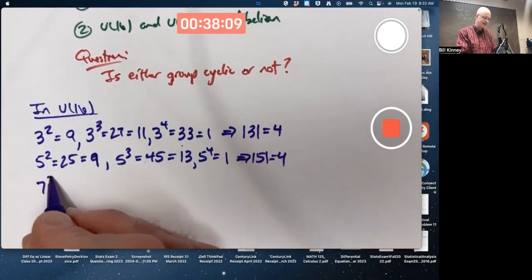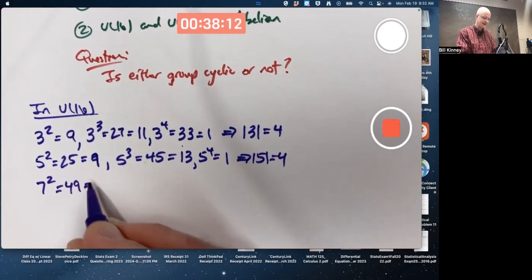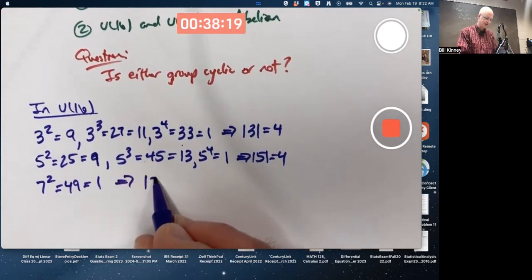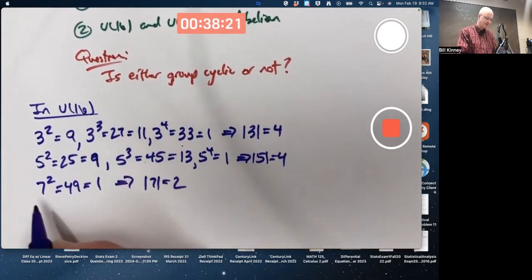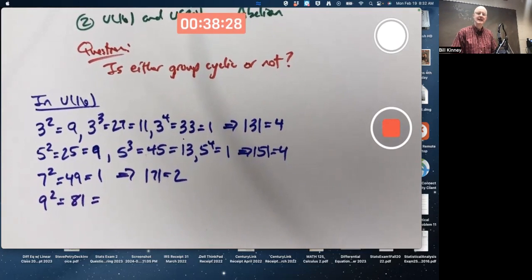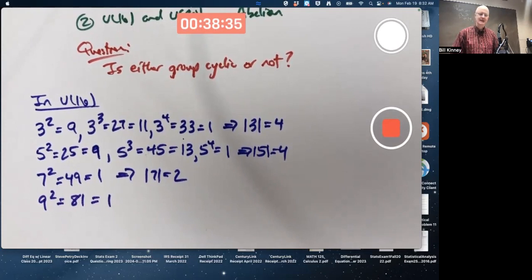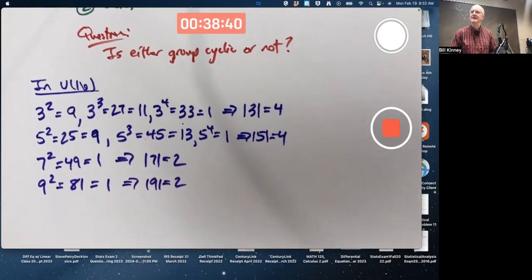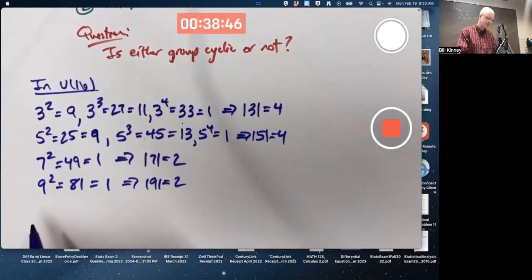What about 7? 7 squared is 49, and 49 mod 16 is 1 — 16 goes evenly into 48. So the order of 7 is 2. And the order of 9? 9 squared is 81, mod 16 is 1 — 16 times 5 is 80. So the order of 9 is 2. So far we're not getting any elements of order 8; U16 might not be cyclic.